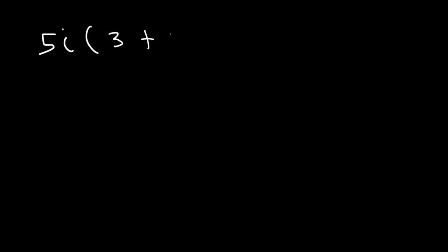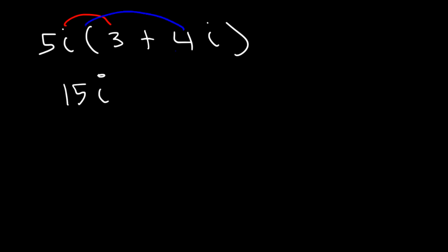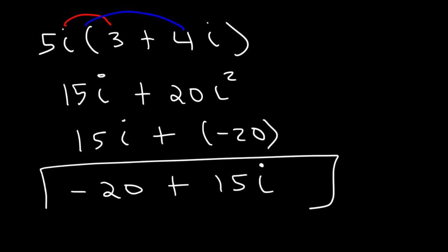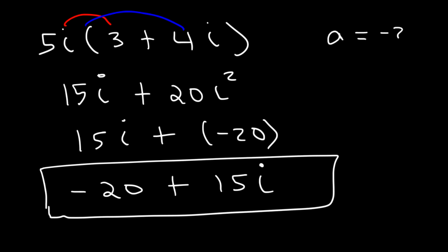What about 5i multiplied by (3 plus 4i)? Go ahead and simplify this expression. 5i times 3 is 15i. Then 5i times 4i is positive 20i squared, and i squared is negative 1, so 20 times negative 1 is negative 20. Writing it in standard form — that's a plus bi form — a is equal to negative 20 and b is 15.